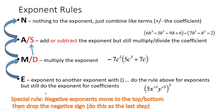Any time I'm dividing or multiplying and I get a negative exponent, I handle it at the very last step — I either move it to the numerator or to the denominator and drop the negative sign. I'll explain when this comes up.